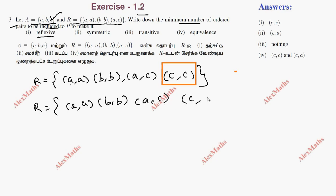So (C,A), (B,C) — this is symmetric. We have to include (C,A).